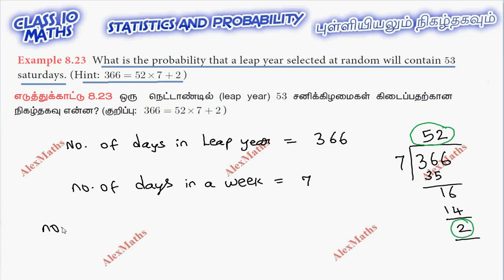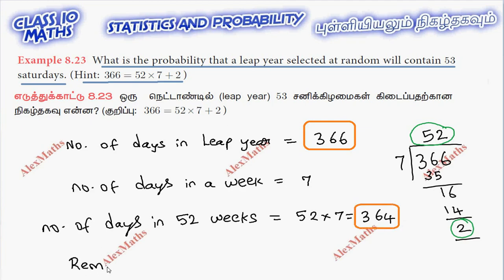52 into 7, this is 364. But we have number of days in leap year is 366. So 52 weeks is 364. Remaining number of days equal to 366 minus 364, total 2.